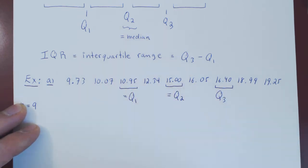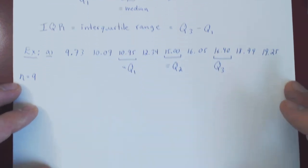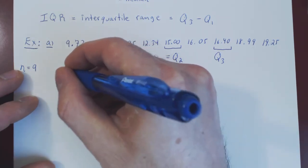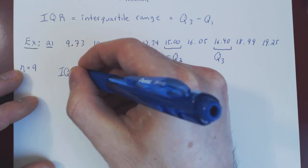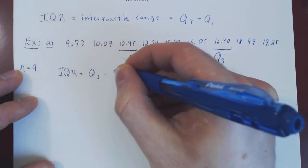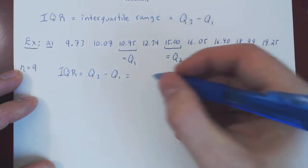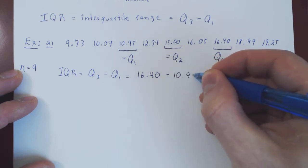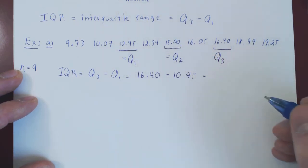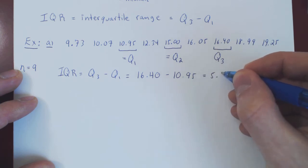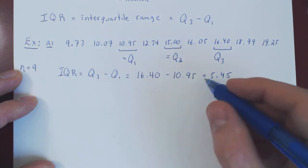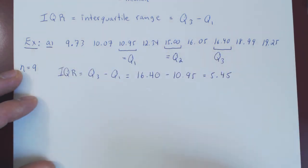Each quartile is an element of the original set of values. We can also compute the interquartile range: IQR = Q3 minus Q1 = 16.40 minus 10.95 = 5.45. That is the interquartile range for this set of values.